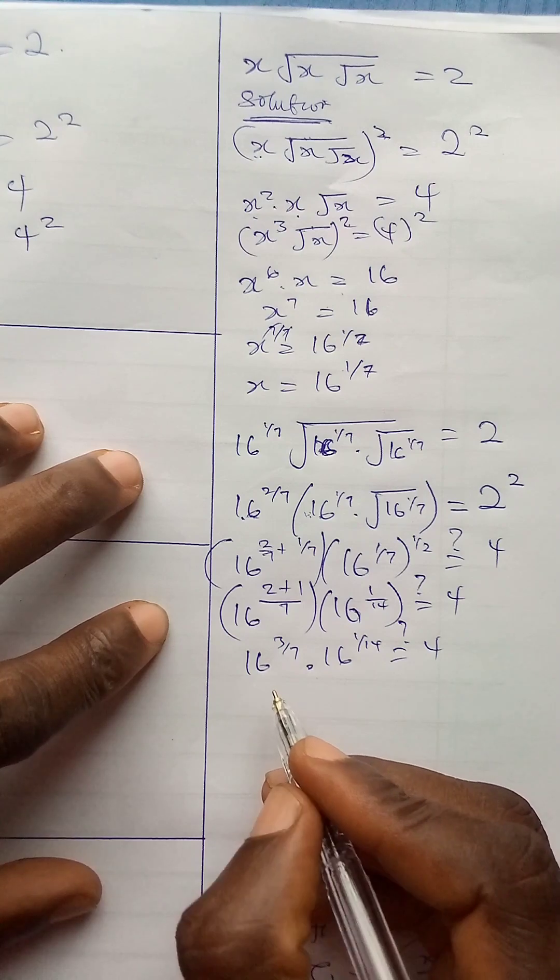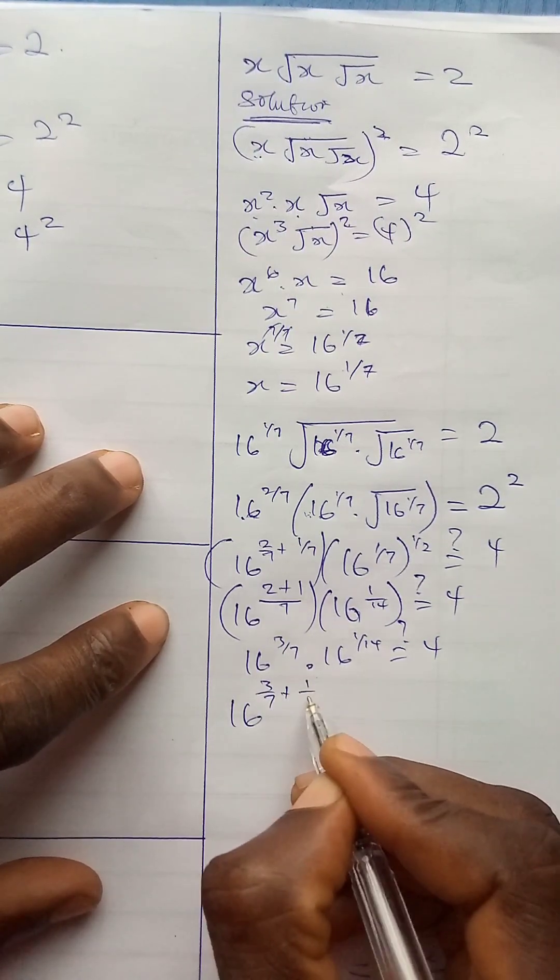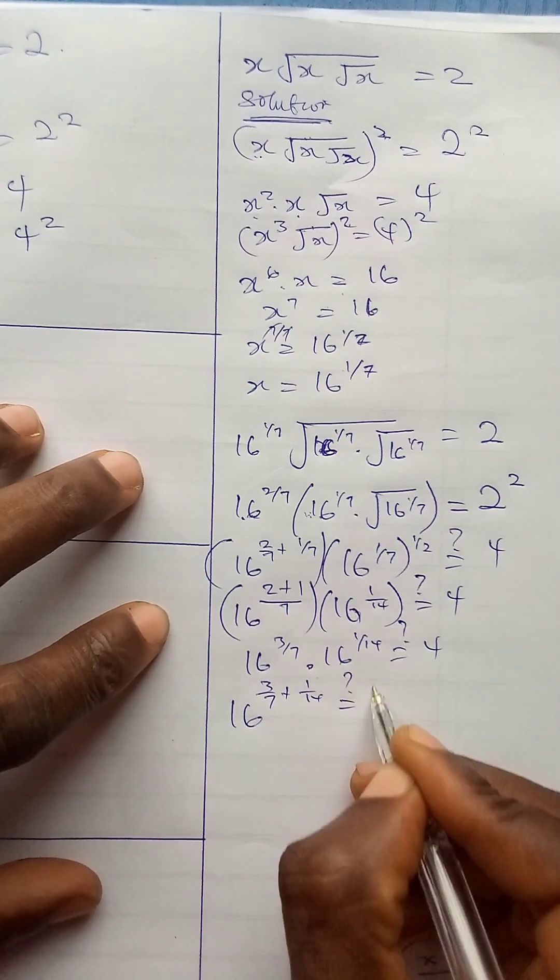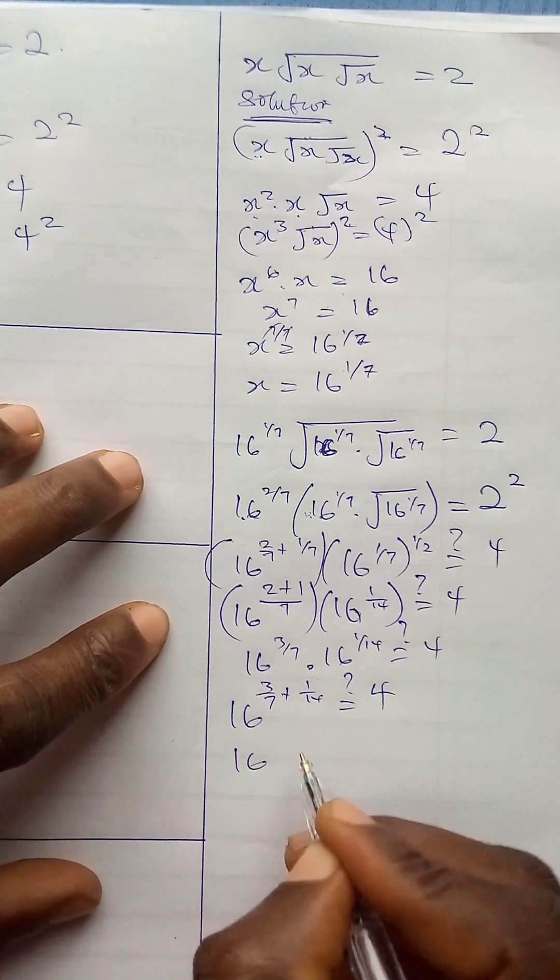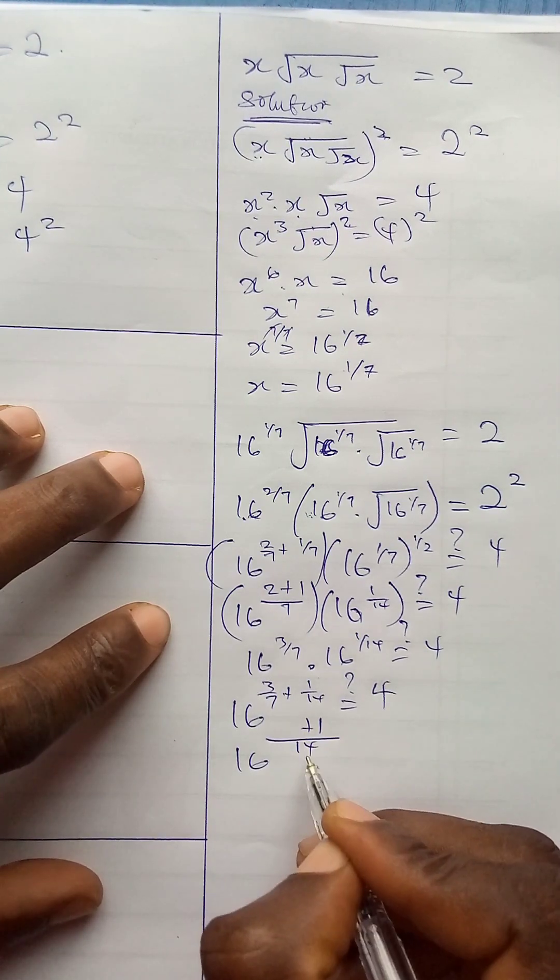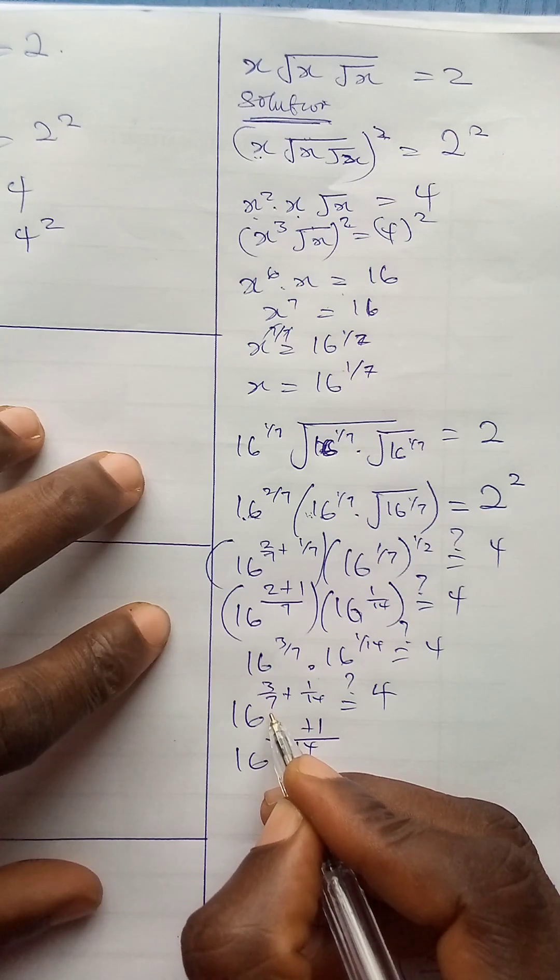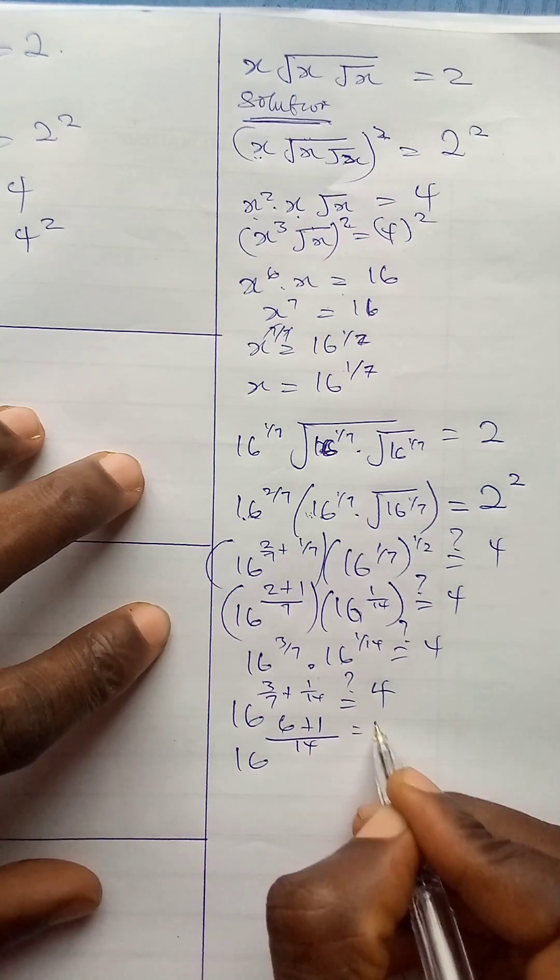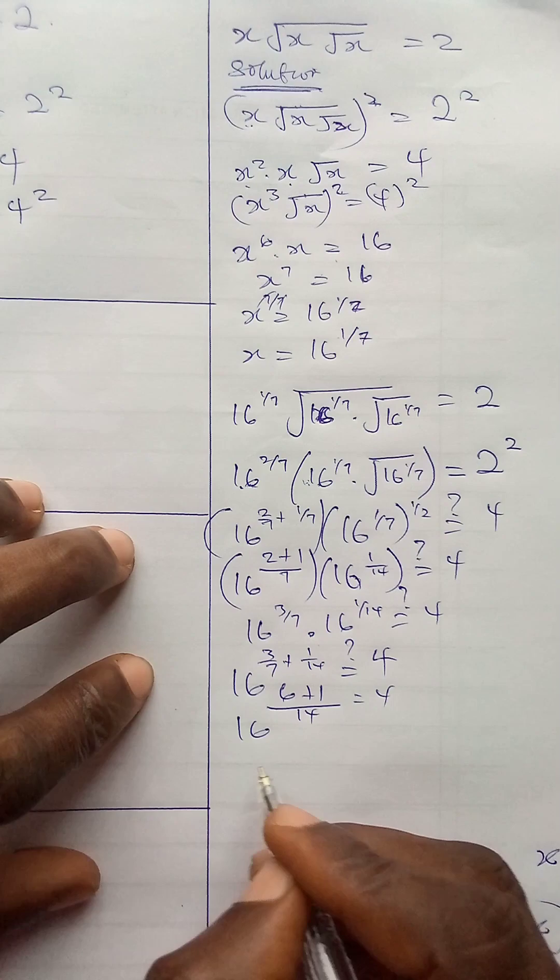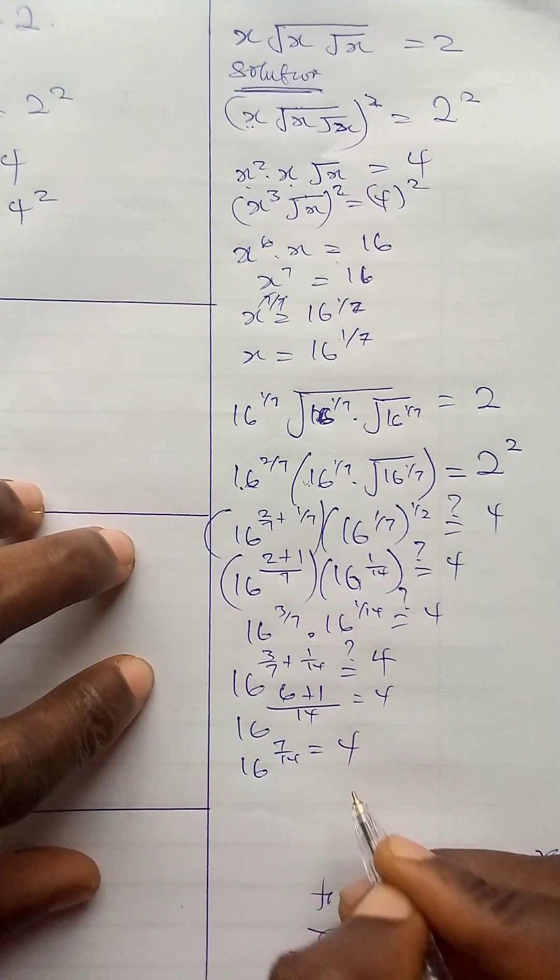Also applying addition law of indices, 16 to power 3 over 7, plus 1 over 14, is it equal to 4? 16 to power, the LCM is 14, this is 1, plus, 14 divided by 7 will give me 2, 2 times 3 is 6. Now, 16 to power 7 over 14, is equal to 4. 7 over 14 is 1 over 2, so 16 to power 1 over 2, is equal to 4.